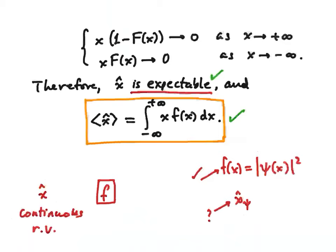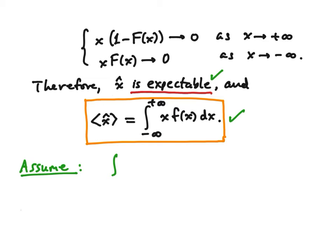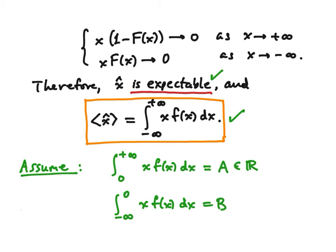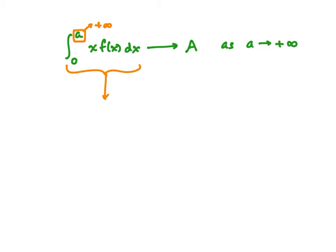So let me show you. First, I'm going to show how we know that capital F is tight. We're assuming the convergence of the improper integral — in detail, the integral from 0 to +∞ of x·f(x), which we call capital A (some finite real number), and the integral from −∞ to 0, which we call capital B. Recalling the definition of a singly improper integral: this means that integrating from 0 up to little a approaches capital A as little a goes to positive infinity.